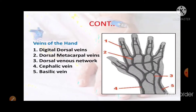Veins of the hand include: the digital dorsal veins, the dorsal metacarpal veins, the dorsal venous network, the basilic vein, and the cephalic vein.